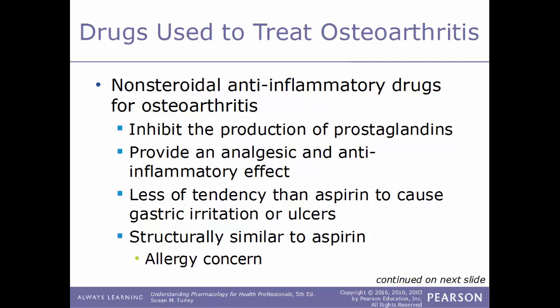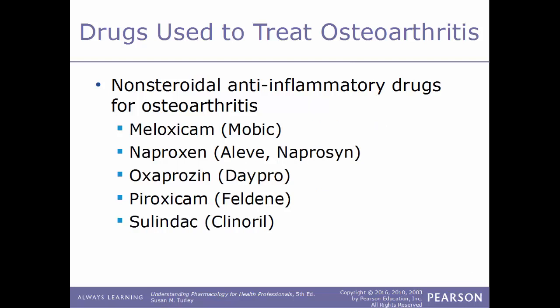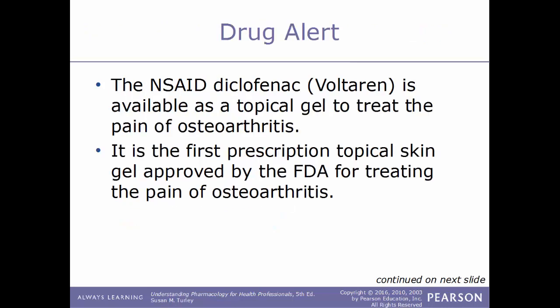NSAIDs inhibit the production of prostaglandins, providing both analgesic and anti-inflammatory effects. They have less tendency than aspirin to cause gastric irritation or ulcers, but are structurally similar to aspirin, so there is an allergy concern — if you are allergic to aspirin, you will most likely be allergic to NSAIDs as well. Common examples include diclofenac (Cataflam/Voltaren), fenoprofen (Nalfon), ibuprofen (Advil/Motrin), indomethacin (Indocin), ketoprofen, meloxicam (Mobic), naproxen (Aleve), oxaprozin (Daypro), piroxicam (Feldene), and sulindac (Clinoril).